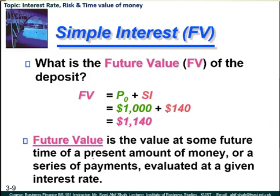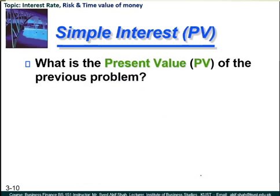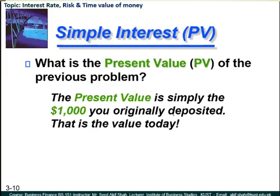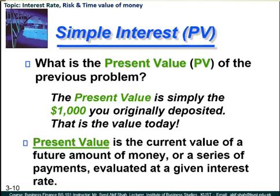Future value is the value at some future time of a present amount of money or series of payments evaluated at a given interest rate. What is the present value of the previous problem? Taking all the previous problem data, the present value is simply the $1,000 you originally deposited into that account. The amount currently available is known as present value, and after 1 or 2 years when simple or compound interest has been credited to your account, it results in the future value. Present value is the current value of a future amount of money or a series of payments evaluated at a given interest rate.